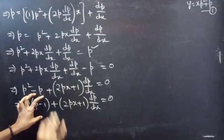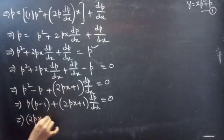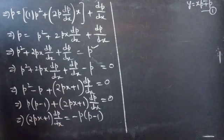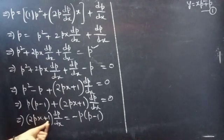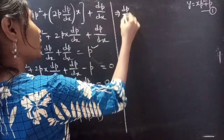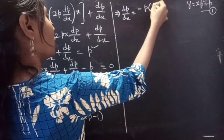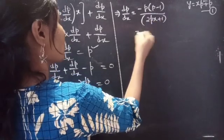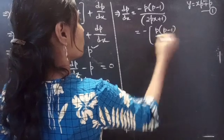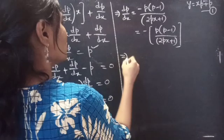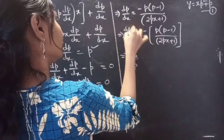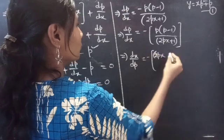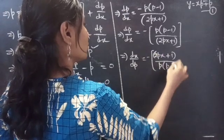Taking the p(p−1) term to the right-hand side gives (2px + 1)(dp/dx) equals −p(p − 1). Therefore dp/dx equals −p(p − 1) divided by (2px + 1), and inverting gives dx/dp equals −(2px + 1) divided by p(p − 1).